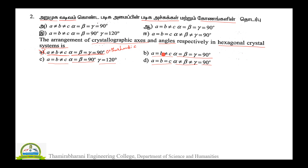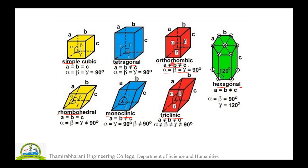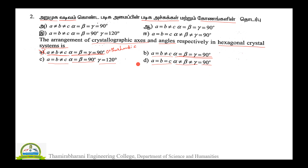Option B: a = b ≠ c, α = β = γ = 90°. This corresponds to the tetragonal crystal system. So Option B belongs to tetragonal — Option B is also wrong.